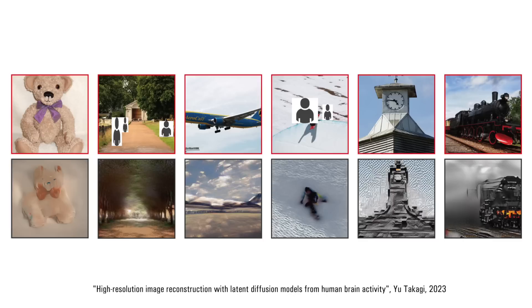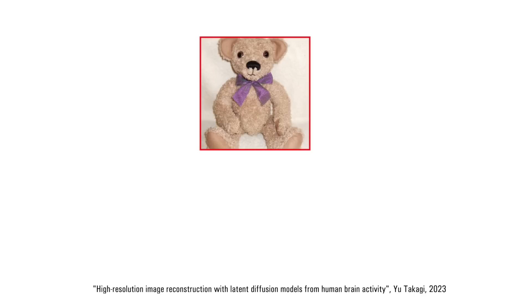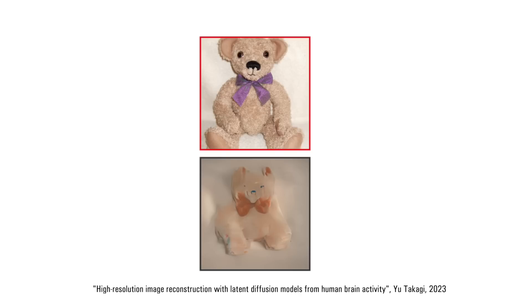Above are images which were shown to human participants, and below there are images which are reconstructed by the algorithm based on the brain activity. Here is a teddy bear with a ball — from the brain waves, AI generated the image below. What's interesting: the position and the scale are fully matching. The only difference is the color of the ball.